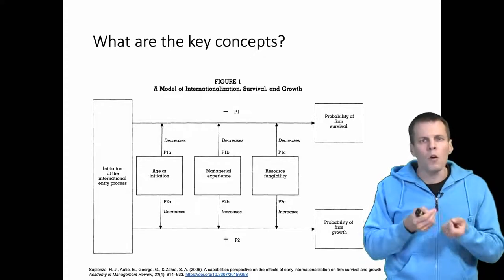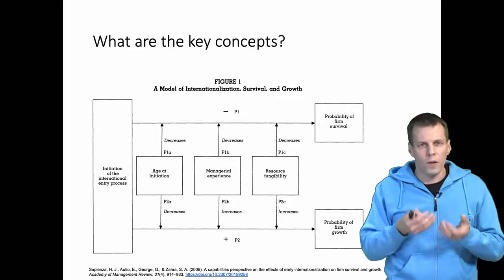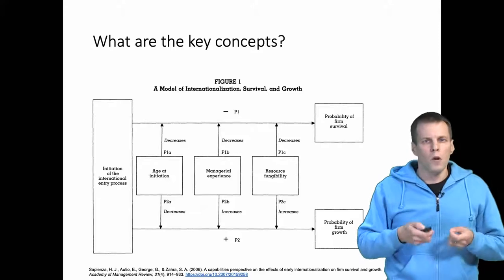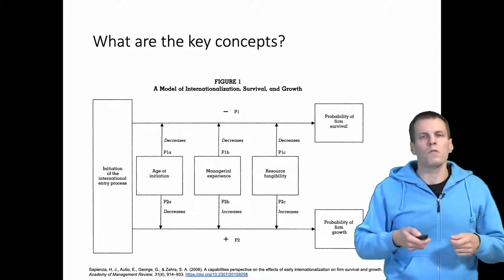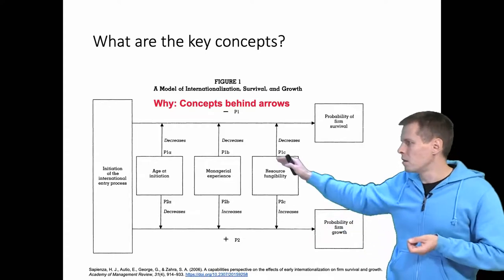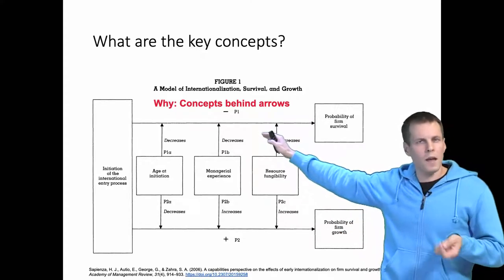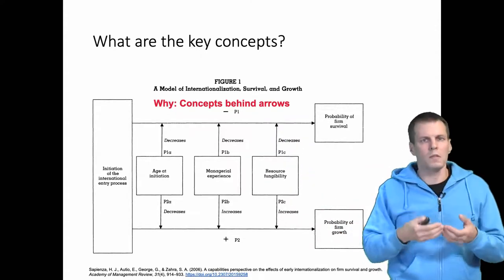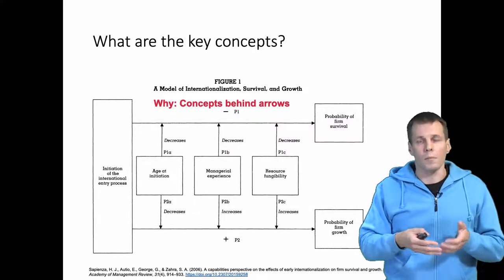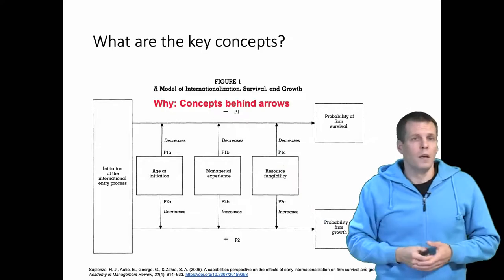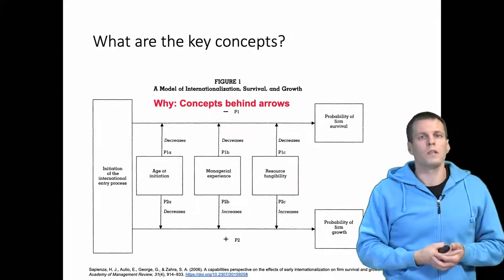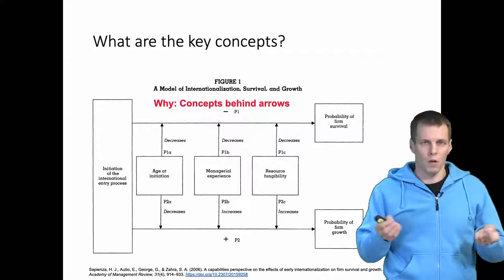And then the article contains an explanation of why that is so. But that's not the only place where you find these concepts. You need to also look at the concepts within the arrows. So the arrows present the causal mechanisms, and you need to look at the why - why do these arrows exist, what kind of concepts are used to explain the mechanisms that are in these arrows.